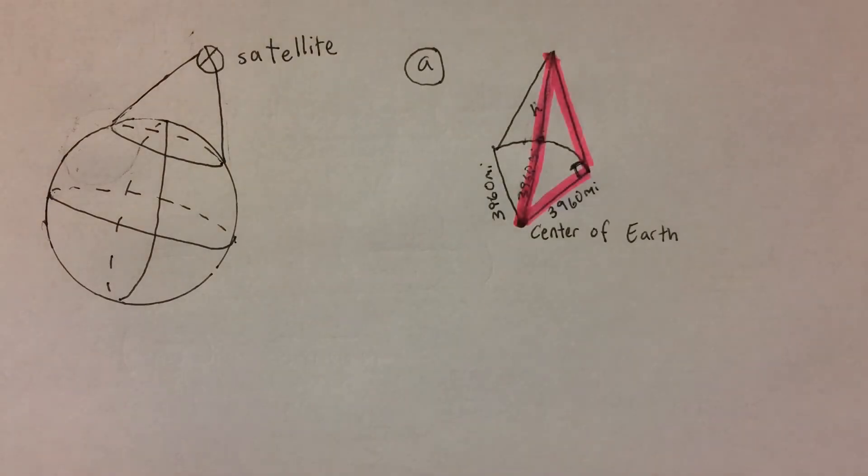In part A, we need to find an expression that is in terms of h, the height of the satellite, for theta, which is the angle measure given in the diagram. The trigonometric function cosine is equal to the ratio of the side adjacent to the acute angle in a right-angled triangle to the hypotenuse.